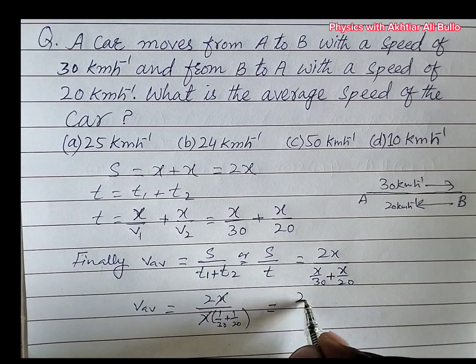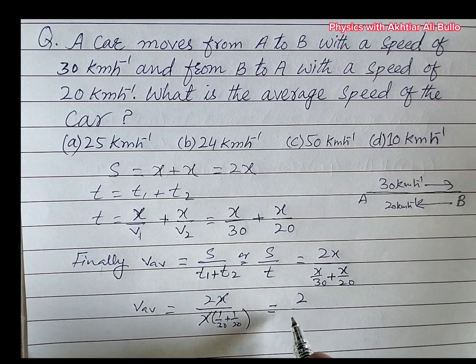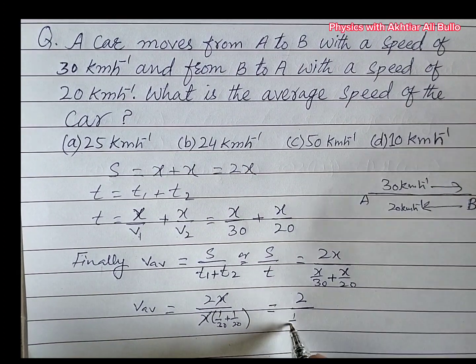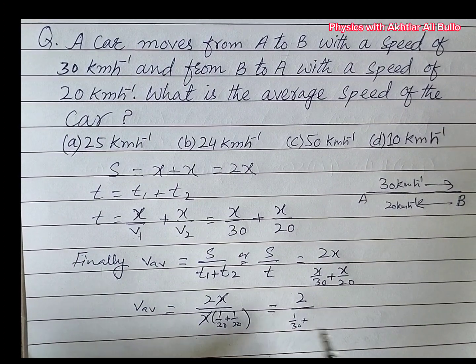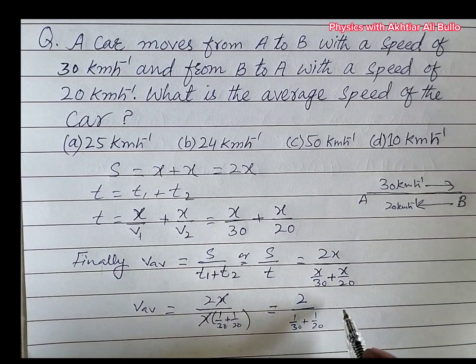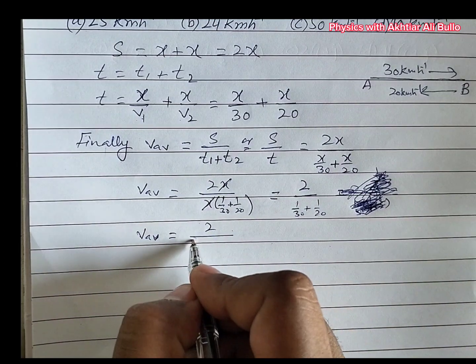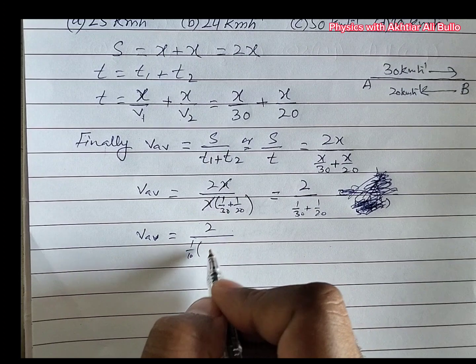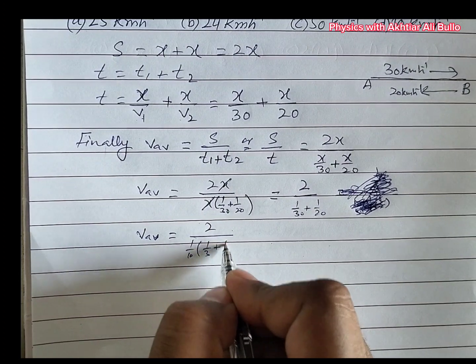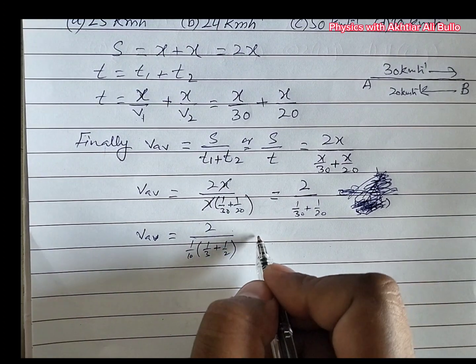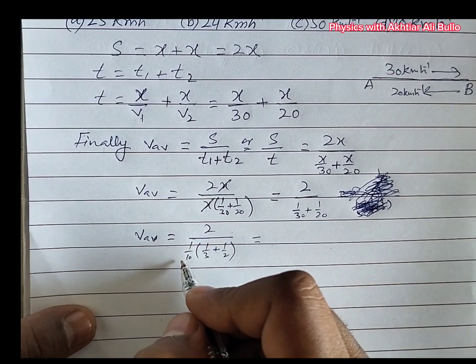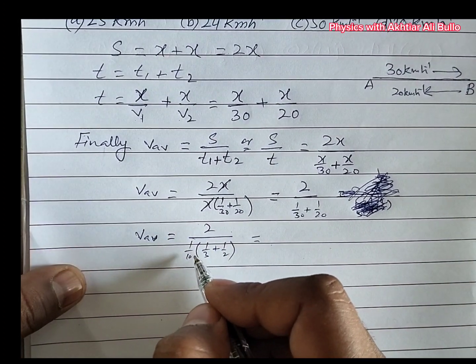So 2 upon 1 upon 30 plus 1 upon 20. So here 1 upon 10 common. So 1 upon 10 into 1 upon 3 plus 1 upon 2. So it will be 10 upon